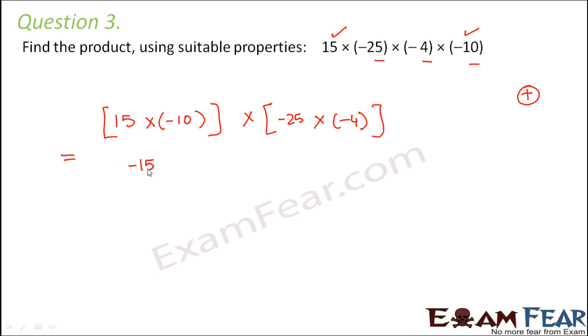So when you multiply these, you get -50. You multiply these, you get 100. So again, it became simpler. The result would be 15 with 1, 2, 3 zeros. So this would be -15,000. And which property did we make use of? We made use of the associative property, which says that the grouping of the integers really does not matter and you can group them the way you want.